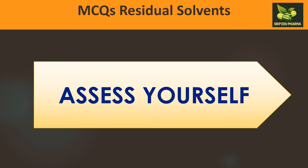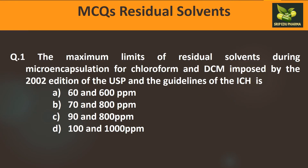Question 1: The maximum limits of residual solvents during microencapsulation for chloroform and DCM, as imposed by the 2002 edition of the USP and ICH guidelines, are: A) 60 and 600 ppm, B) 70 and 800, C) 90 and 800, D) 100 and 1000. Both chloroform and DCM are Class 2 residual solvents. Chloroform has a limit of 60 ppm and DCM has a limit of 600 ppm, so the answer is A.